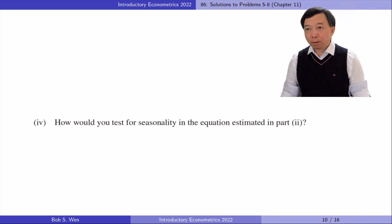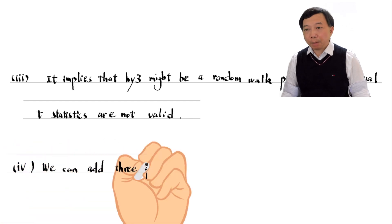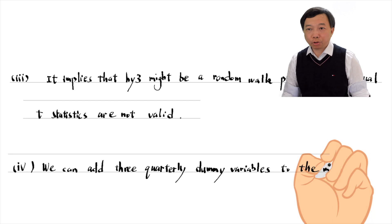In part 4, how would you test for seasonality in the equation estimated in part 2? We can add three quarterly dummy variables to the model and test for their joint significance with an F-test.